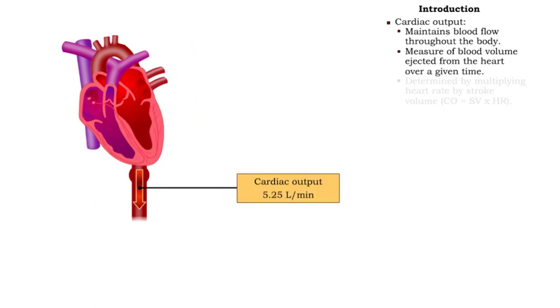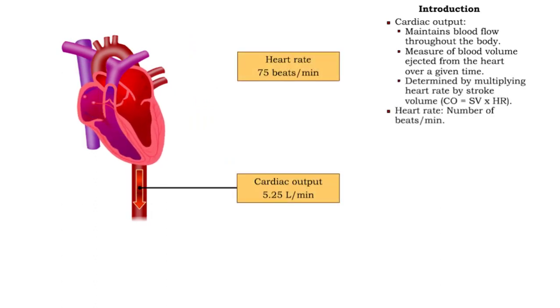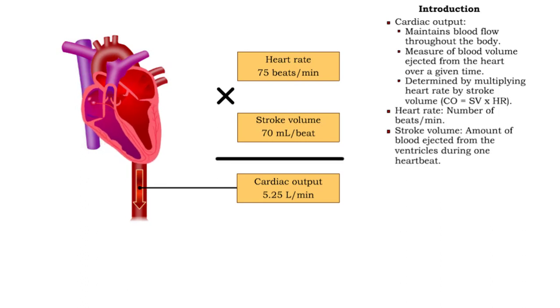Cardiac output is determined by multiplying heart rate by stroke volume. Cardiac output in the typical resting heart is about 5 liters per minute.